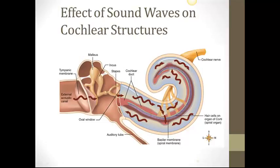Effects of sound waves on the cochlear structures — to review: a sound wave strikes the eardrum or tympanic membrane, causing a vibration. The vibration causes the membrane to vibrate the oval window, just beyond the malleus, incus, and stapes. The vibration of the oval window causes the perilymph in the bony labyrinth of the cochlea to move, which causes the endolymph in the membranous labyrinth, or cochlear duct, to move. This movement stimulates hair cells on the organ of Corti to generate a nerve impulse, which travels as part of the eighth cranial nerve. Nerve impulses reach the auditory cortex of the brain and are interpreted there.